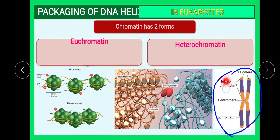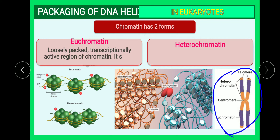The darkly stained area is called heterochromatin, and the lightly stained area is called euchromatin. Chromatin exists in two forms: euchromatin and heterochromatin. Heterochromatin is compacted with more DNA but is physiologically inactive and stains dark, while euchromatin contains less DNA but is physiologically active and stains light.